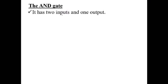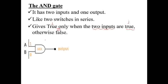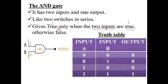The second one is the AND gate. The AND gate has two inputs and one output, and it is like two switches in series. It gives an output of 1 only when both inputs are 1 — otherwise the output is 0. To draw the truth table, we use 2 to the power of n, where n is the number of inputs.